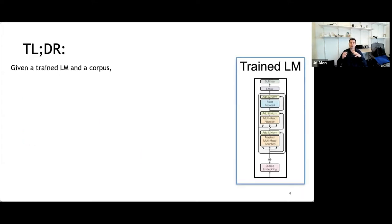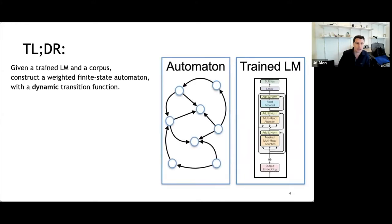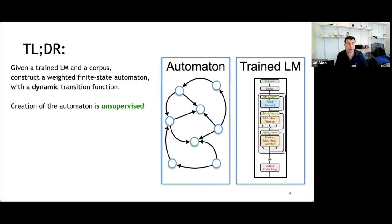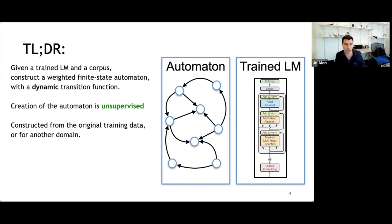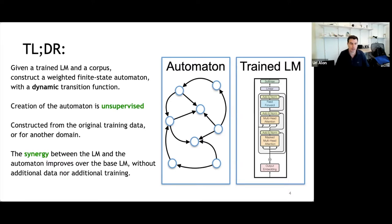Today I'll show you how we can take a trained transformer language model and, given this language model and a corpus, construct a weighted finite state automaton that has a dynamic transition function. The creation of this automaton is completely unsupervised and it can be constructed from either the original training data or from another domain. The synergy between the neural language model and the symbolic automaton improves accuracy over the base language model without any additional data or training.